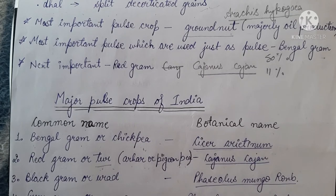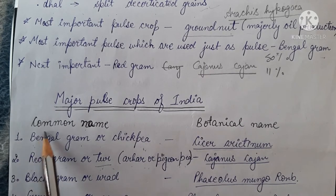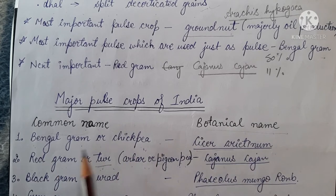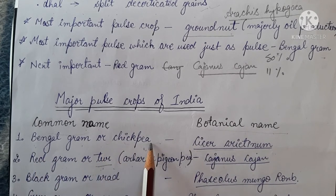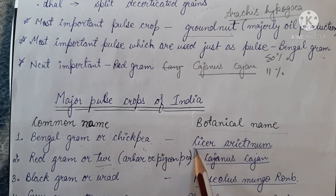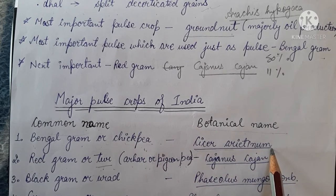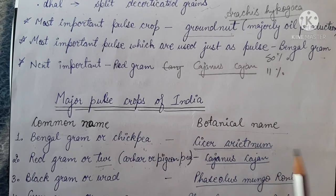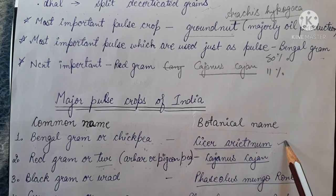Now we will talk about the major pulse crops of India with their common names and botanical names. The first is Bengal gram, also known as chickpea or channe ki daal, with scientific name Cicer arietinum. It accounts for about 50% of the total production of pulses, making it the major pulse crop grown in India.